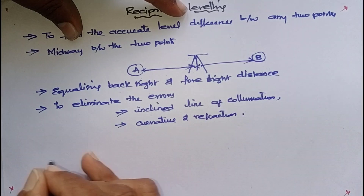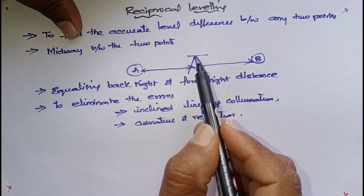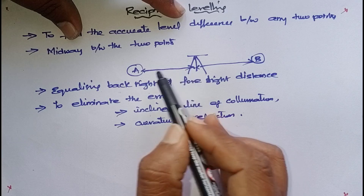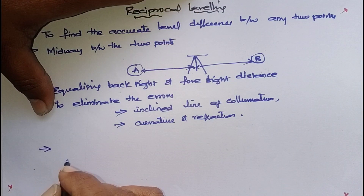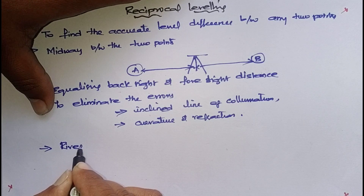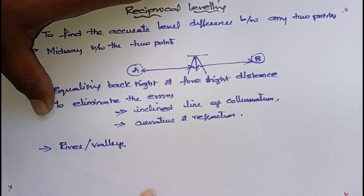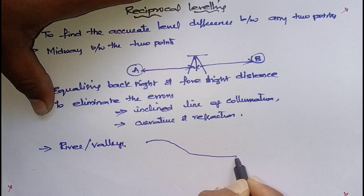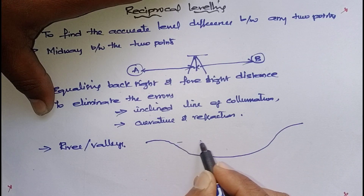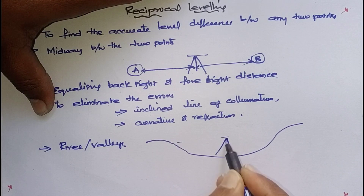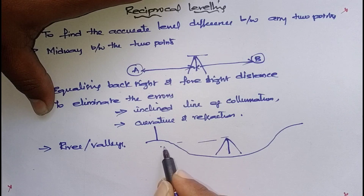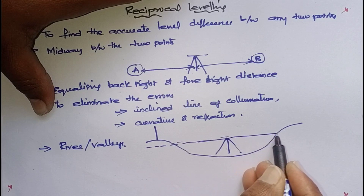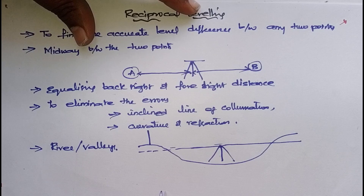In some situations, it is not possible to fix the instrument midway between the foresight and backsight. What situations? In the case of a river or any valley when you want to cross it. Because your bank will be like this, your river somewhere like this - if I fix the instrument here, the line of sight will not be coinciding. So it is not possible in those situations.